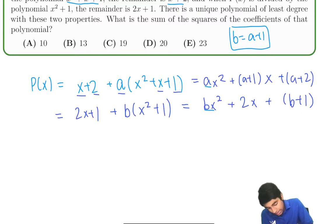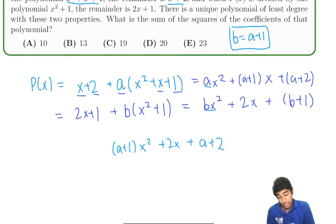So then we have a plus 1 x squared plus 2x plus a plus 2 equals ax squared plus a times x or equal to a plus 1 x plus a plus 2. And we can obviously cancel out a plus 2 from both sides.